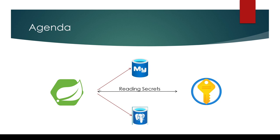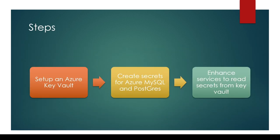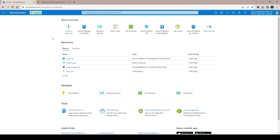The steps are: first, set up an Azure Key Vault; then create secrets for Azure MySQL and Postgres databases; and finally enhance the existing services to read secrets from the Key Vault, which will then be used to connect to those databases. Let's get started on the Azure portal.